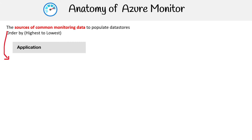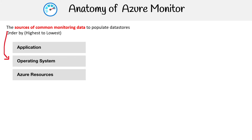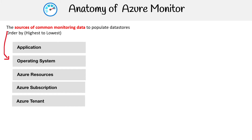You probably want application data, operating system data, data from Azure resources, data at your subscription level, your tenant level — which is going to be associated with Active Directory — and custom sources.